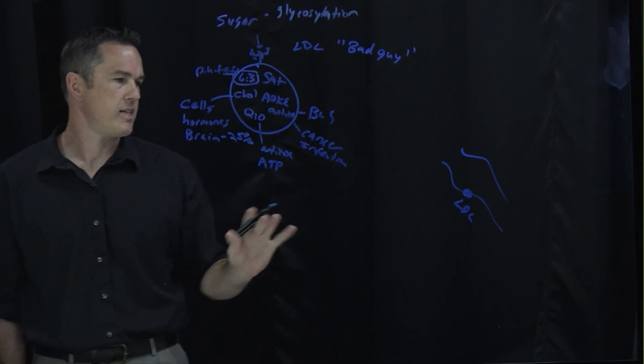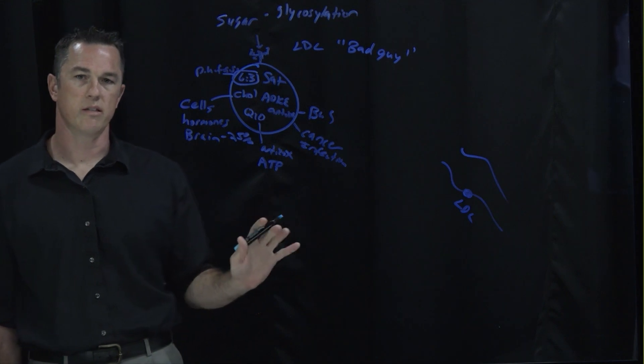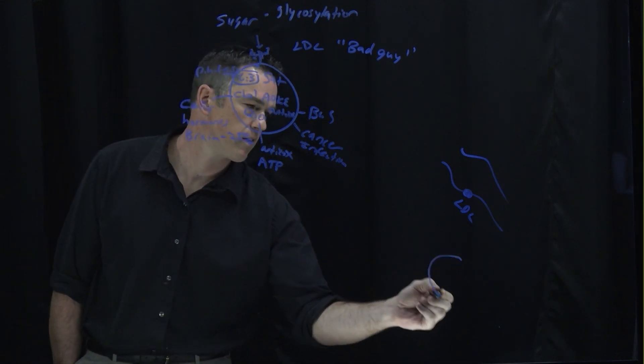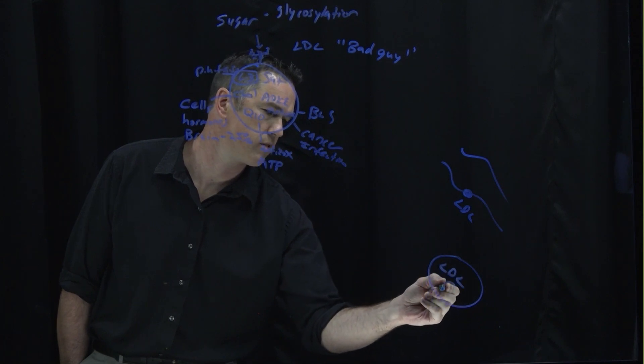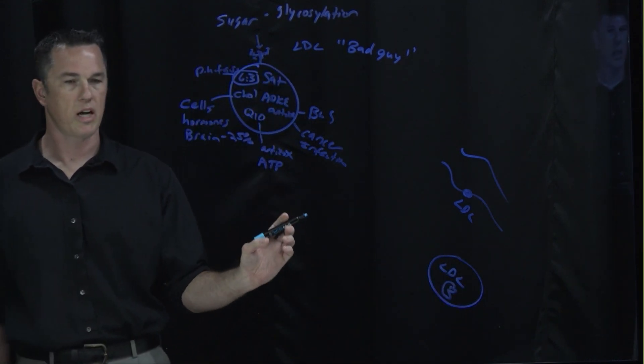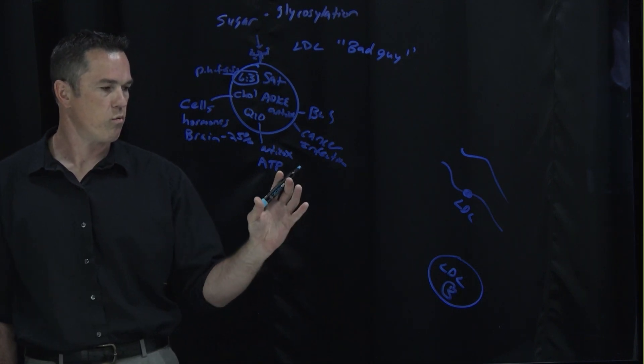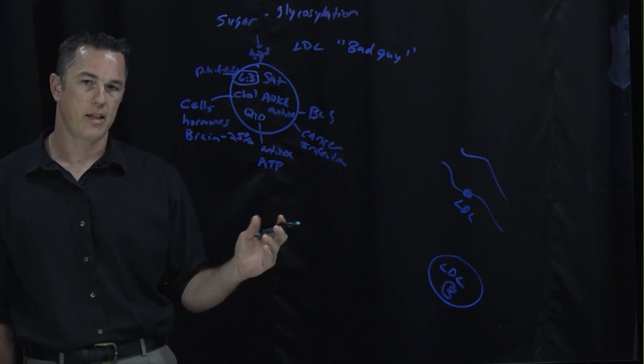The second thing: in about the 1980s they did some studies and they said all right, we're going to prove that LDL causes heart disease. So what they did is they took LDL and they put it in a petri dish with some macrophages, which are these white blood cells kind of look like Pac-Mans, part of your immune system. They said we're going to put these together and watch it cause heart disease and watch it activate those macrophages. But when they did that, nothing happened.